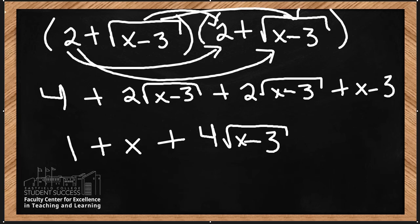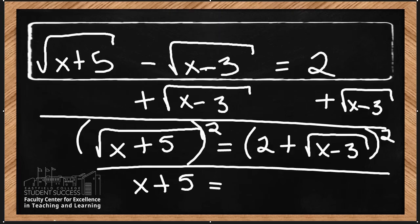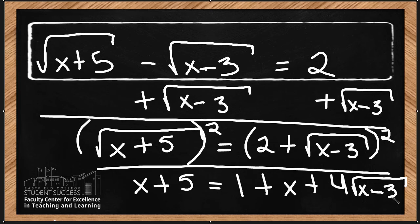So this is what we get after we foil a radical. On this side I'm going to have 1 plus x plus 4 root x minus 3.